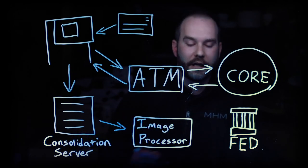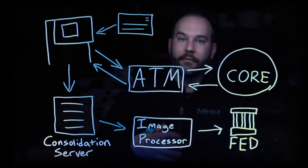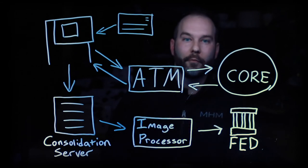From there your image processor takes over. They can send the proper information to the fed or to an image archive or to wherever that deposit information needs to go.